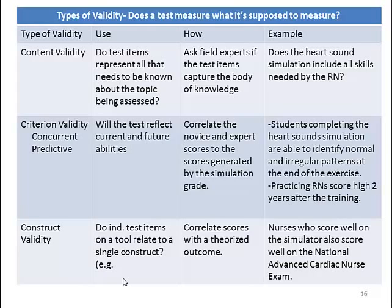Criterion validity is divided into two parts: concurrent and predictive. Will this test reflect current abilities and future abilities? We want to know: does our simulation experience correlate at the novice level and the expert level? We could take our simulation experience on heart sounds and see if the student is able to identify normal and irregular patterns at the end of the exercise. We could take that same test and go out to see if practicing RNs who completed this simulation two years earlier are able to perform as well.